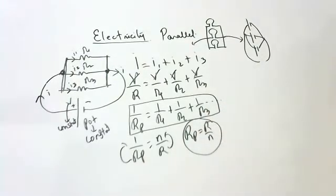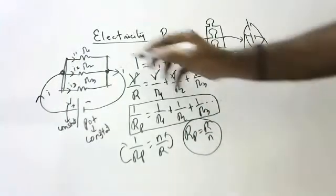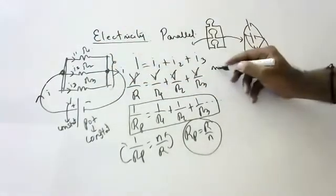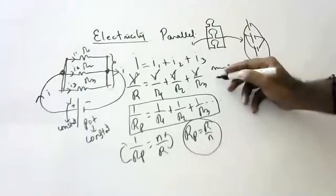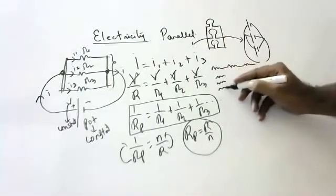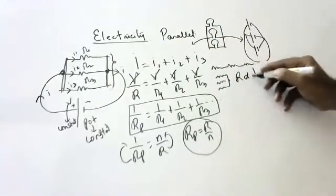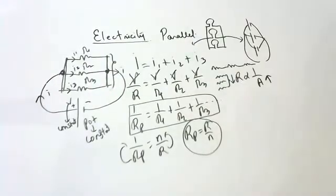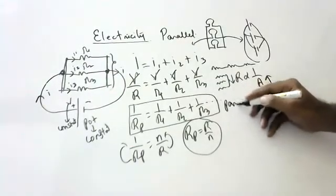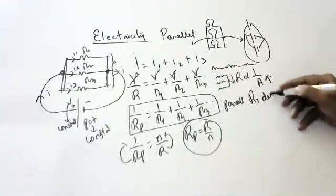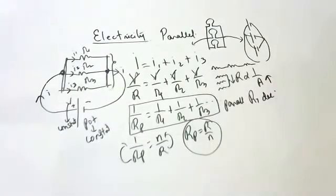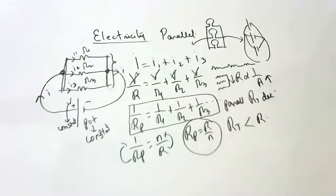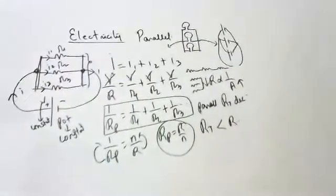In parallel, the overall area is increasing — it is becoming thicker. In series, overall length was increasing, but in parallel, overall area is increasing because thickness is increasing. We know resistance is inversely proportional to area. If the area is increasing, resistance decreases. So in parallel, overall resistance decreases, and the overall resistance will be less than the least individual resistance.